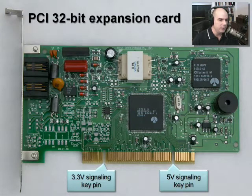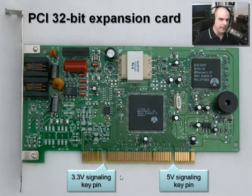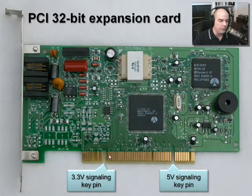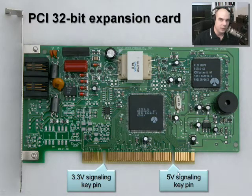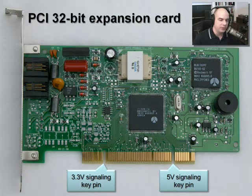Here's a 32-bit card. You can see not only is it the shorter card, but it's got these slots in it based on what type of voltages are available on the motherboard that you will need to run this card. This card will support both 3.3 volt and 5 volt on the motherboard. Not all motherboards support all voltages, so you want to be sure the adapter card you're getting matches the voltages available in the PCI slots.